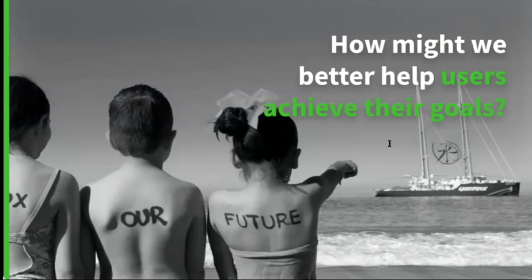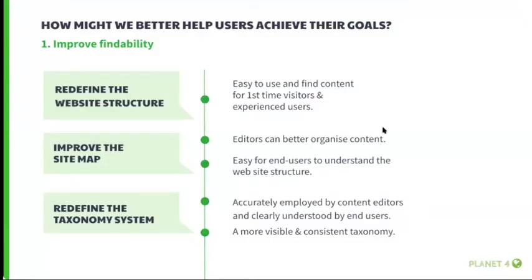Now that we know the main problems, how might we better help users achieve their goals? First, we should improve findability by redefining the website structure to be easier to use and find content for both first-time visitors and experienced users. We also need to improve the site map — this came up a lot in interviews — so editors can better organize content and it will be easier for end users to understand the site structure. Then we should redefine the taxonomy system so it's accurately used by content editors and clearly understood by end users, and make the taxonomy more visible in the sites.